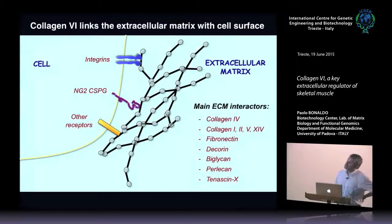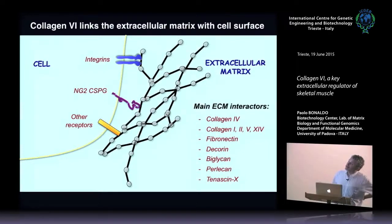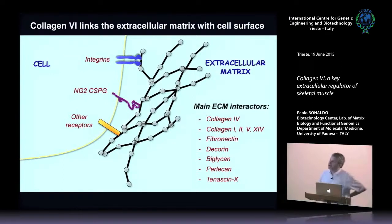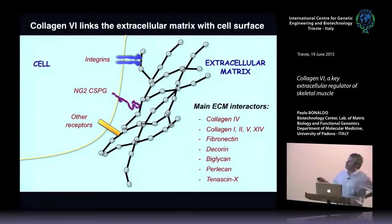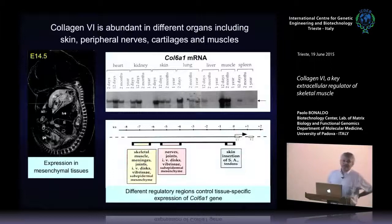Collagen 6 is a matrix protein but, unlike other matrix proteins, it is very close to the cell surface, where it has a bridging role because it binds different cell receptors. There is no specific receptor for collagen 6 — it binds different integrins, typical receptors for matrix proteins, but also membrane proteoglycans, growth factors, and other receptors we are still characterizing. In the matrix it binds different matrix proteins: different collagens, fibronectin with high affinity, biglycan, decorin, perlecan, and other matrix proteins.